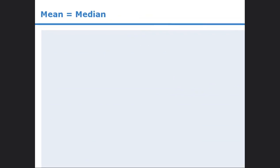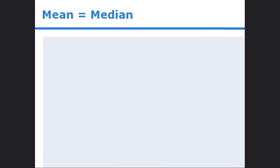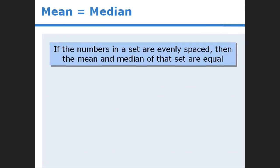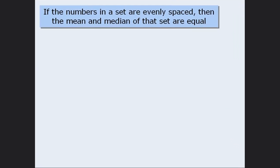In this lesson, we will examine a useful property involving the mean and median of a set of numbers. The property is as follows: if the numbers in a set are evenly spaced, then the mean and median of that set are equal. These numbers are evenly spaced since each number is two greater than the number before it. If the numbers in a set are arranged in ascending order, the numbers will be evenly spaced if the difference between any two adjacent numbers is the same.